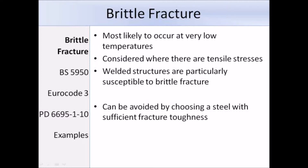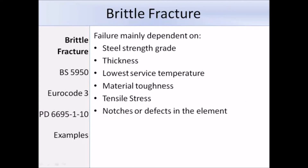Brittle fracture can be avoided by choosing a steel grade with sufficient fracture toughness. Brittle fracture is dependent on a number of different things: the steel grade, since different steel grades will have different properties; the thickness of the element, as thick sections are more susceptible to brittle fracture than thin sections; also the lowest surface temperature, the material toughness, tensile stress, and if there are any notches or defects, which can increase the likelihood of brittle fracture due to increased stress concentrations around the defect.